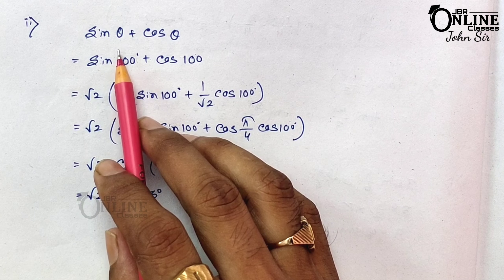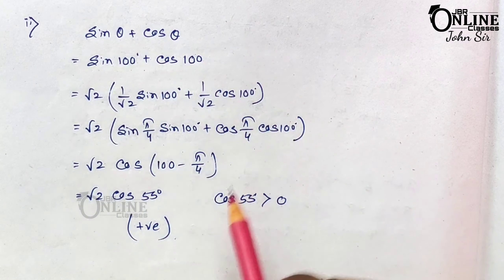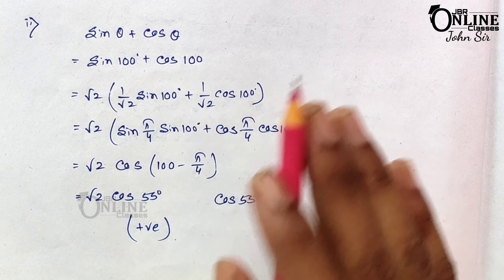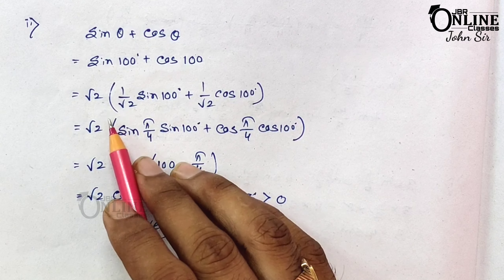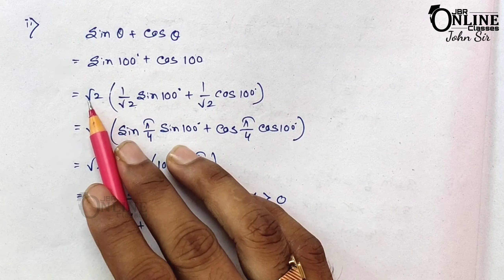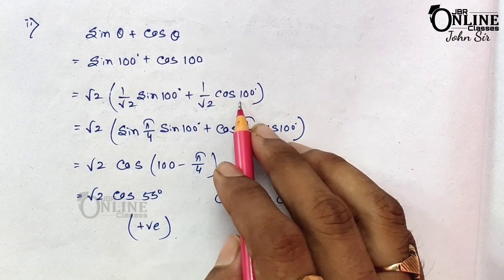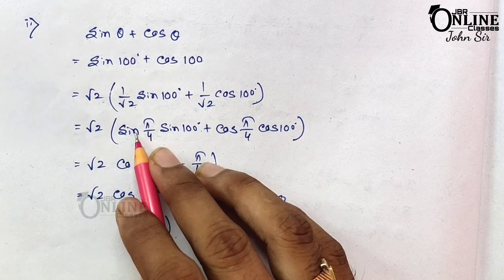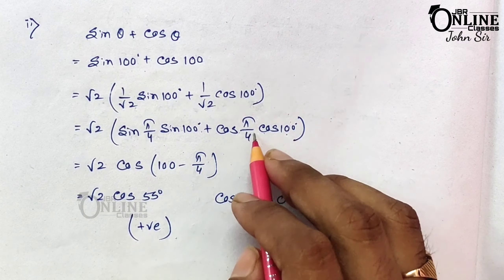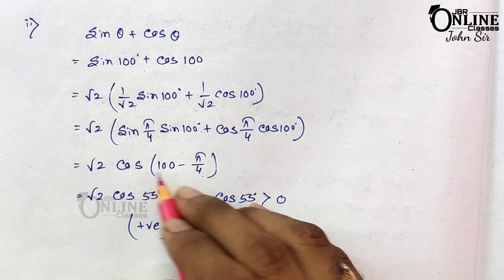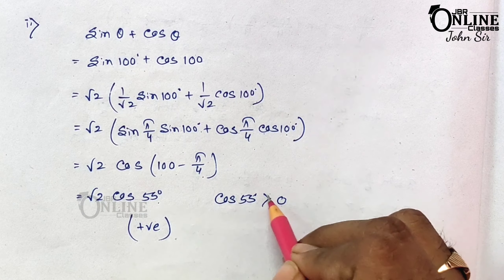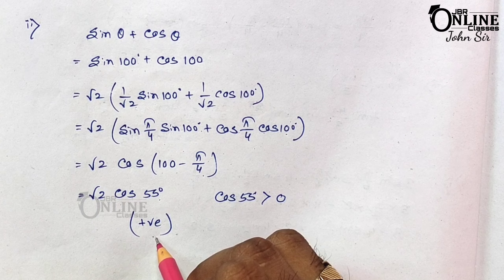Problem 8.2: If θ = 100°, determine the sign of sinθ + cosθ. Multiply and divide by √2: (1/√2)sinθ + (1/√2)cosθ = √2[sin(π/4)sin100° + cos(π/4)cos100°] = √2·cos(100°−45°) = √2·cos55°. Since cos55° > 0, the expression is positive.